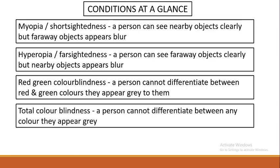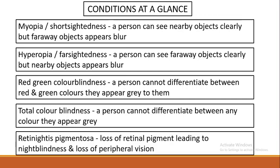Total color blindness means a person cannot differentiate any color — everything appears gray. Last is retinitis pigmentosa, which means loss of retinal pigment. The retina is the inner layer of the eye, and if the retinal pigment is lost, it causes night blindness and loss of peripheral vision. Peripheral vision is the ability to see objects surrounding your main focus point; in retinitis pigmentosa this peripheral vision is completely lost, along with night blindness.